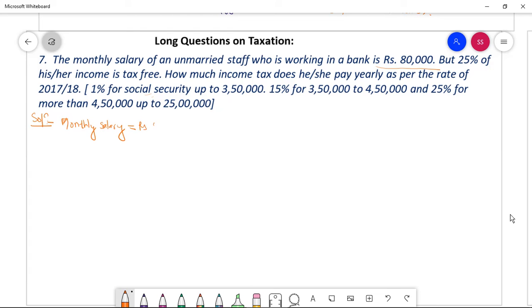So the annual salary, annual salary equal to Rs 12 times 80,000 = 9,60,000. Yes, this is the annual salary.